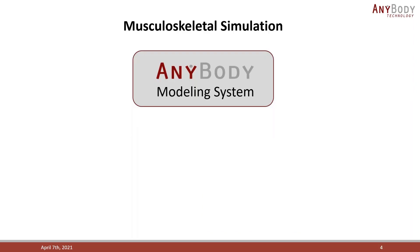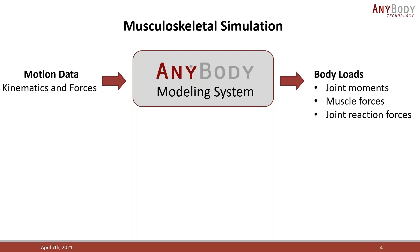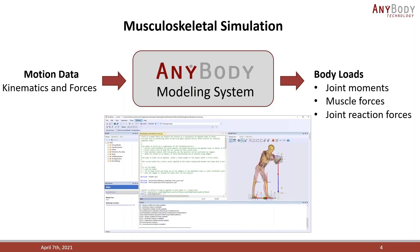So what is the Anybody modeling system? The Anybody modeling system is a software that allows you to do musculoskeletal modeling and simulation. As input it takes motion data as kinematics and forces, and it calculates the internal body loads as joint movements, joint reaction forces, and muscle forces. Here at the bottom of the screen you can see a screenshot from the Anybody modeling software which can give you an idea of how the system actually looks.